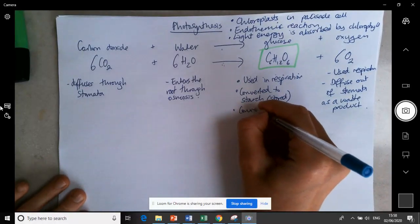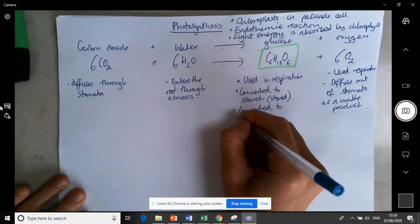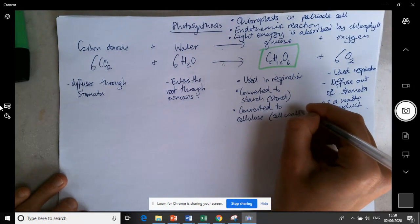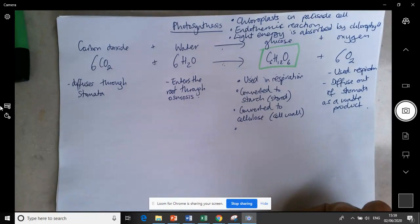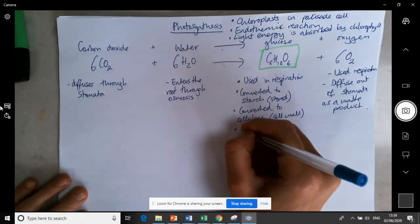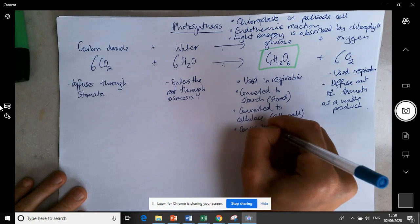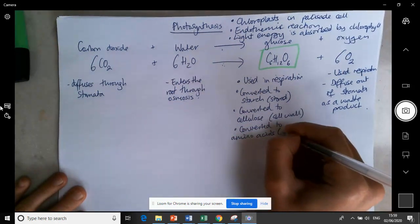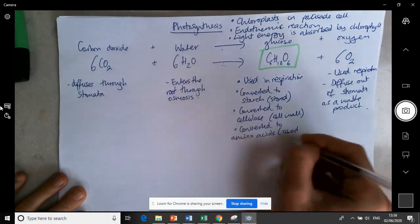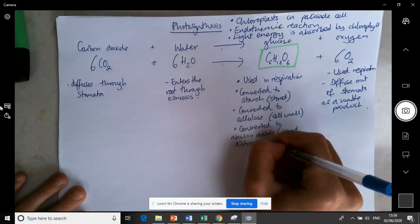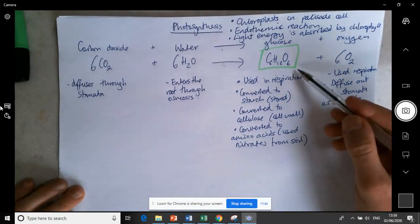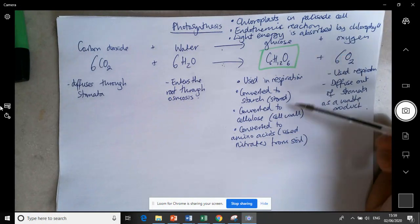It can be converted to cellulose. We know where cellulose is found - it's found in the cell wall to strengthen the cell. Finally it could be converted to amino acids. For this to take place it has to use nitrates from the soil as well. So that glucose is vital. It can be used in all of these different things which are important for the plant to survive.